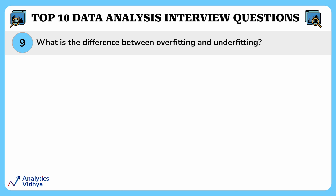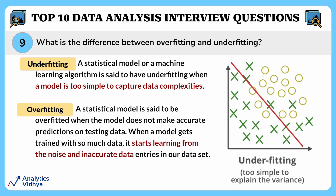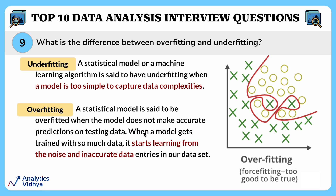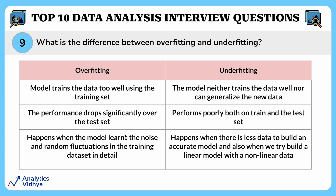This question asks about the differences between underfitting and overfitting. A statistical model or machine learning algorithm is said to have underfitting when a model is too simple to capture data complexities — like having a tool that's too basic for the job. A model is said to be overfitted when it does not make accurate predictions on test data; when trained with too much data, it starts learning from noise and inaccurate entries — like studying so much detail that you get confused and make mistakes. A table showing the differences between the two is provided — screenshot it for future reference.